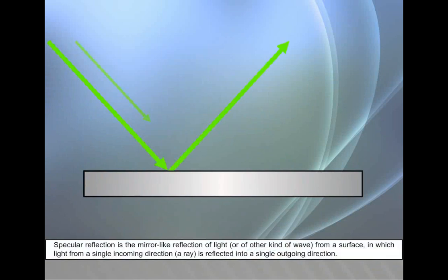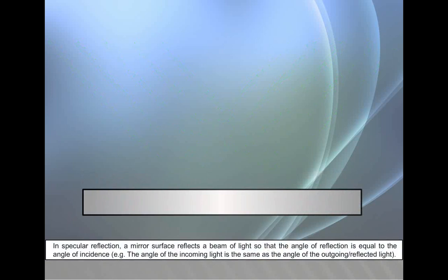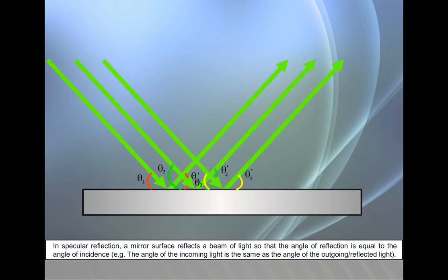Specular reflection is the mirror-like reflection of light or of other kinds of waves from a surface, in which light from a single incoming direction, a ray, is reflected into a single outgoing direction. In specular reflection, a mirror surface reflects a beam of light so that the angle of reflection is equal to the angle of incidence. For example, the angle of the incoming light is the same as the angle of the outgoing or reflected light.